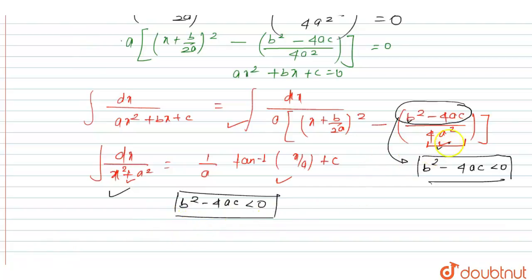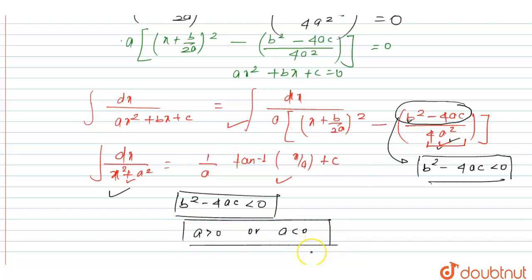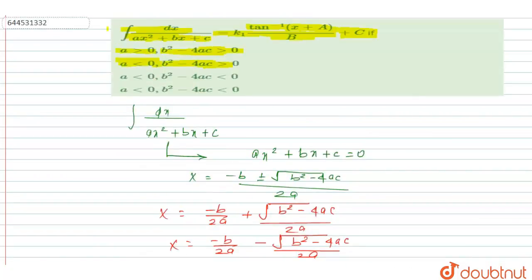The value of a is either positive or negative because a appears here as a² term. So a can be greater than 0 or a can be less than 0. Combining these conditions, looking at the options, b² - 4ac less than 0 is correct for both cases. Therefore, option C and option D are the correct answers to this question.